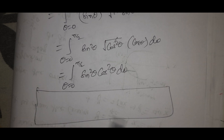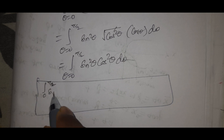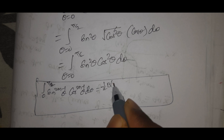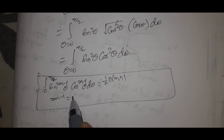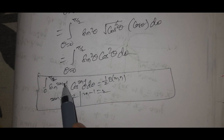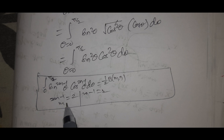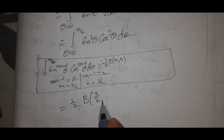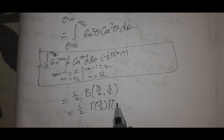Using the Beta function formula: integral 0 to pi by 2 of sin to the power 2m minus 1 theta times cos to the power 2n minus 1 theta d theta equals one half times Beta(m, n). Comparing, 2m minus 1 equals 2, so m equals 3 by 2, and 2n minus 1 equals 2, so n equals 3 by 2. Therefore the integral equals one half times Beta of 3 by 2, 3 by 2, which equals one half times Gamma(3/2) times Gamma(3/2) divided by Gamma(3).